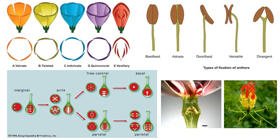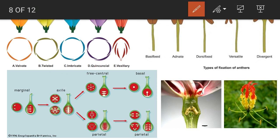The next character of the flower is aestivation. Aestivation is studied in calyx and corolla. If all individual members of a whorl lie side by side without overlapping, it is called valvate aestivation. If all members of the whorl overlap each other from one side, it is called twisted aestivation. If one member is completely inside and one is completely outside, it is called imbricate aestivation. In imbricate, one member is completely outside, one is completely inside, and the other three are overlapping.